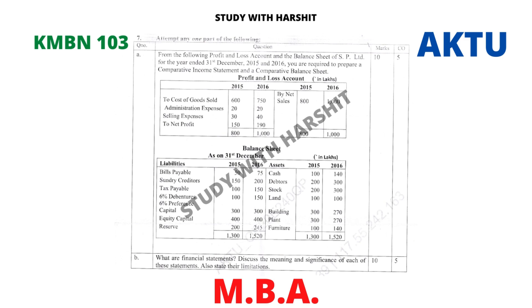Question 7A: From the following profit and loss account and balance sheet of SP Limited for the year ending 31st December 2015 and 2016, you are required to prepare a comparative income statement and a comparative balance sheet.